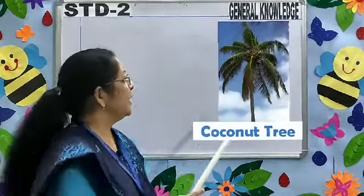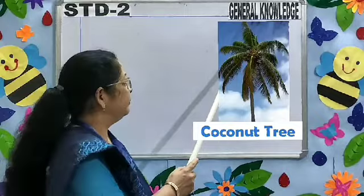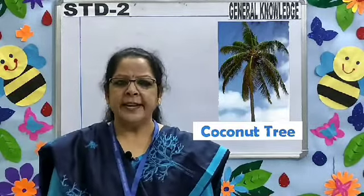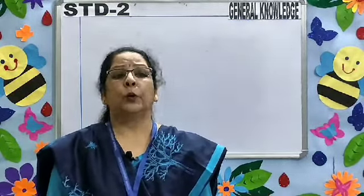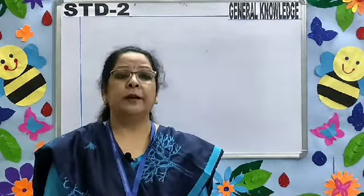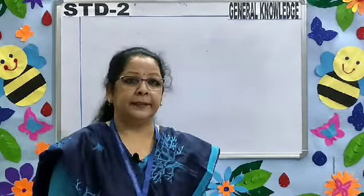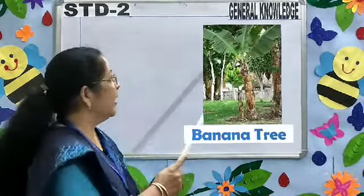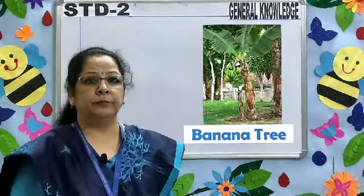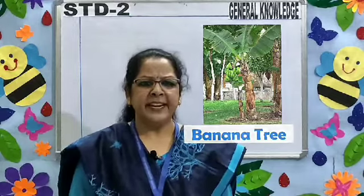Coconut tree — it gives us coconut, fiber, and oil. Banana tree — we eat the flower and the fruit of it. Banana leaves are used as plates.